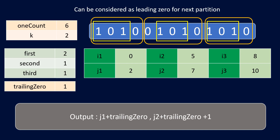The output is j1 plus the number of trailing zeros required — given by the third partition's trailing zero count — and then j2 plus that trailing zero count plus 1 for the start of the next partition. So we now know when to return -1,-1, how to partition, how to handle trailing zeros, and how to compute the final output indices.